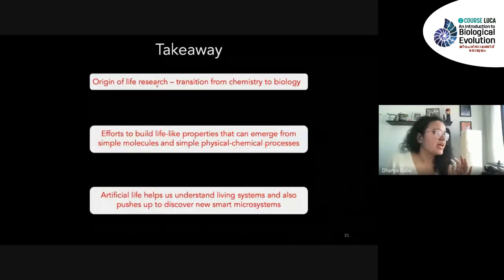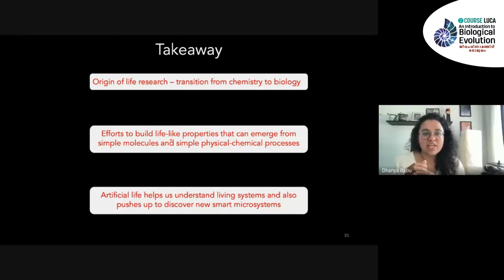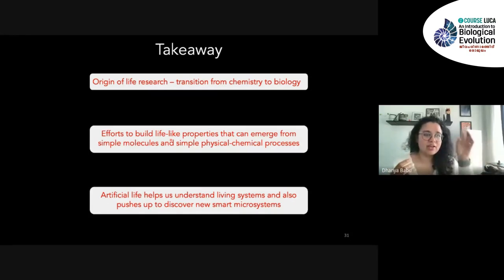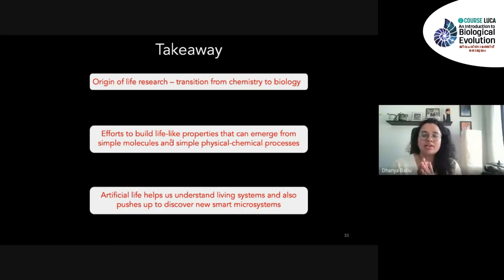To wrap up: origin of life research is to study the transition from chemistry to biology. The effort is to build systems from simple molecules that can have lifelike properties — whether growth, movement, or replication. It's too ambitious to build one grand system that can do all of this, but the idea is to pick one property and see if we can build it with simple molecules. Eventually the hope is that all this comes together and we will have a better understanding of how to create life.